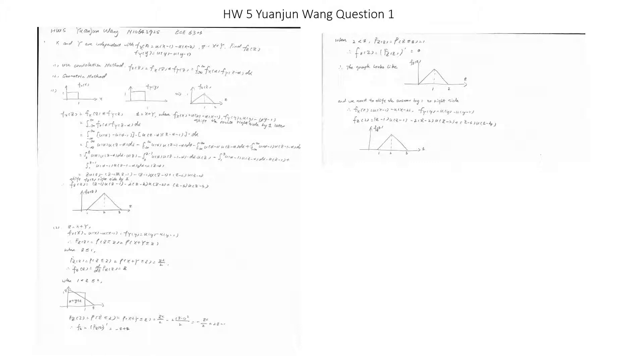For the first part, I use the convolution method. We know that fz(z) equals fx(z) convolved with fy(z), which equals the integral from negative infinity to infinity of fx(alpha) times fy(z - alpha) d alpha.